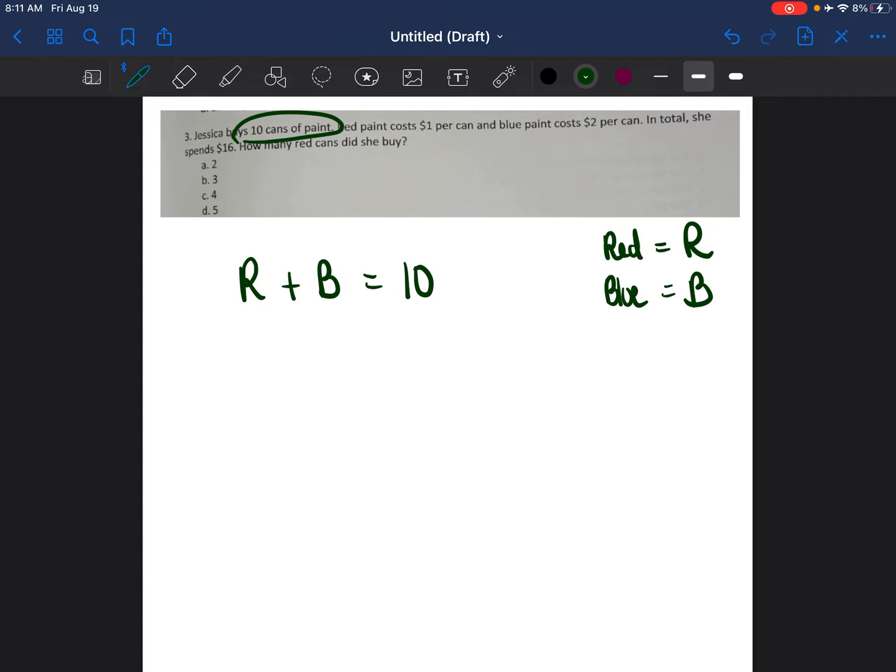So I have an equation written down already, but that doesn't cover all the information in that problem. I'm going to have to form another equation. This just talks about the number of cans. We need to make an equation that talks about the price of the cans. Red paint costs $1 per can, so 1 times R. For example, if I buy two cans of red paint, I would do 1 times 2, which is equal to 2. That would be the price. Plus the price of blue paint, and that's $2 per can. So I'm going to write 2B. And once I buy the red cans of paint and once I buy the blue cans of paint, it's going to be a total of $16.